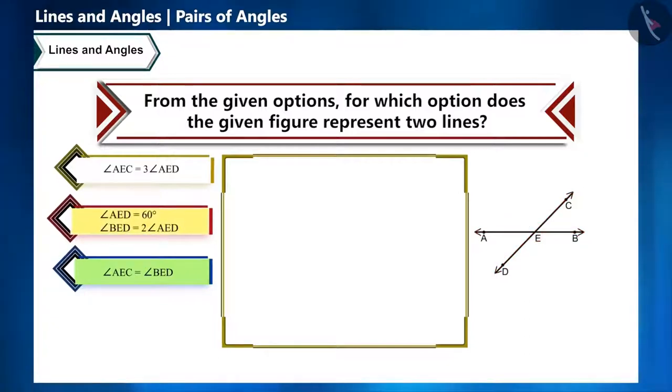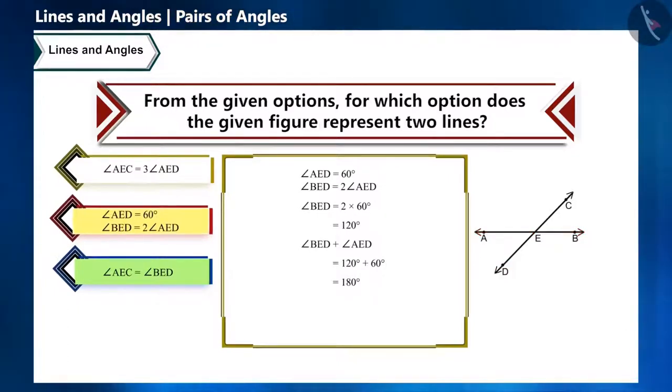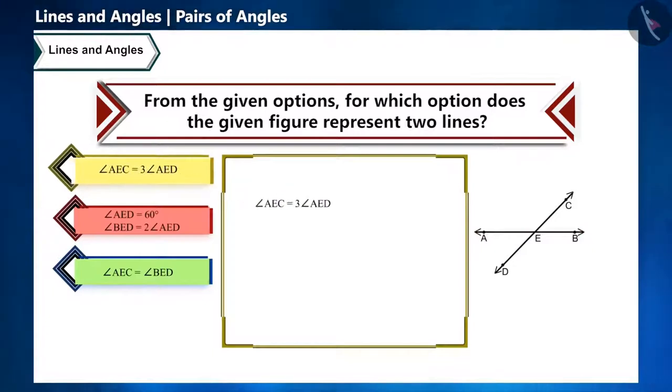If you look at the second option, angle BED is 2 times angle AED which is 120 degrees and the sum of these two angles will be 180 degrees. Angle AED plus angle BED equals 180 degrees. From this, you know that AB is a line and ED a ray. And from the first option also, it cannot be ensured that AB and CD are lines.